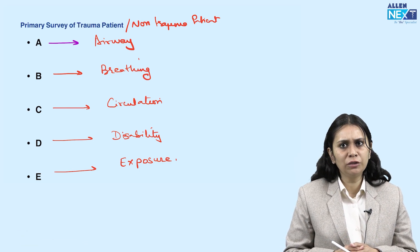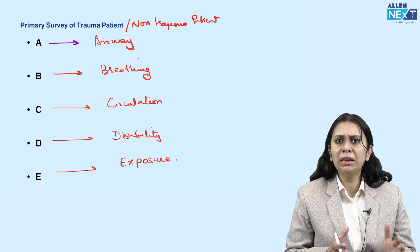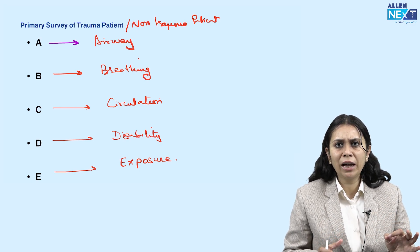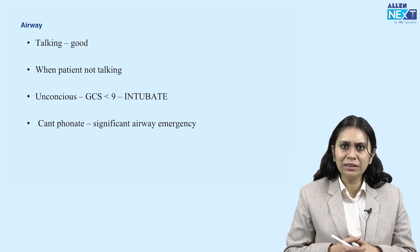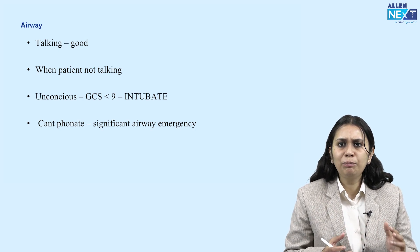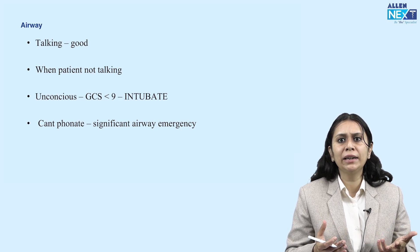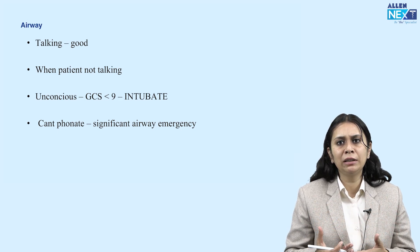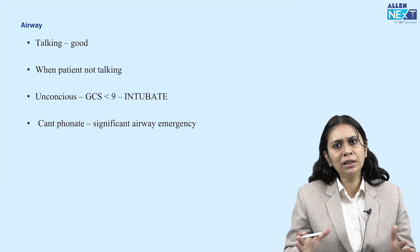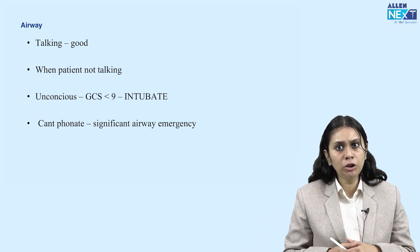A stands for airway. Airway threats can be life-threatening, so we must immediately assess the airway. To assess the airway, try to talk to the patient. If the patient is talking, it is a good sign — they can maintain the airway. If someone is talking, their airway is maintained. When the patient is not talking, we have to assess the GCS.